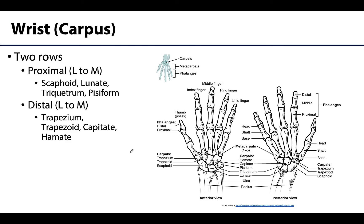Let us start with the proximal-most portion: the wrist. This whole region is referred to as the carpus, but more often these bones are called the carpals. The carpal bones are divided into two rows — a proximal row and a distal row. I do expect you to know the names of the carpal bones, at least to be familiar with them.